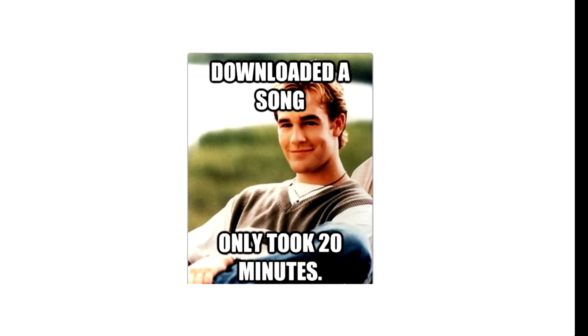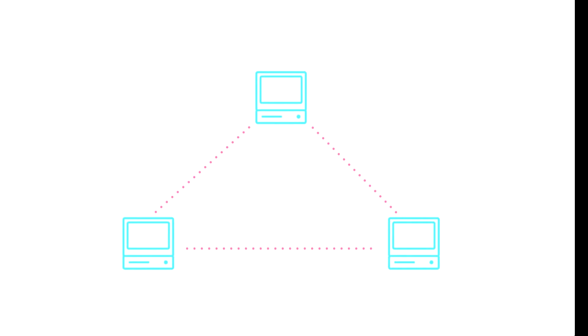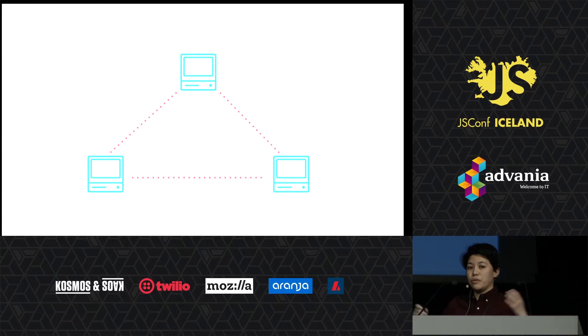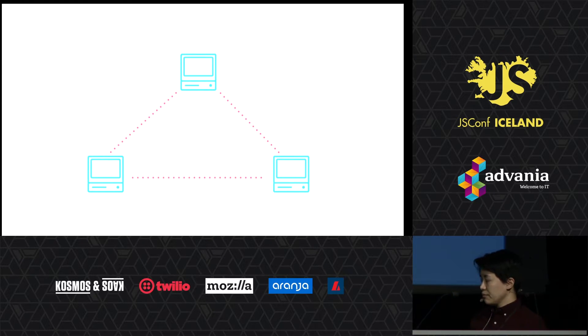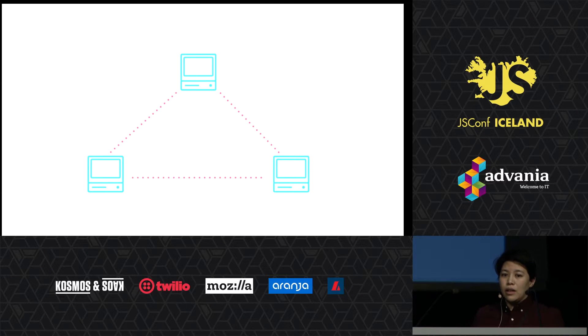Once upon a time, a long time ago, it used to take a really long time to download files — a really, really long time to download a song. People came up with peer-to-peer technologies that allowed people to share files quickly and easily. If I had part of a song and someone had part of the same song, we can share those parts and that would result in a faster download. We sort of forgot about that when YouTube came up and internet connections got faster and servers became way more efficient.